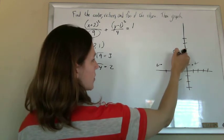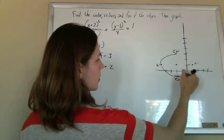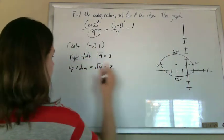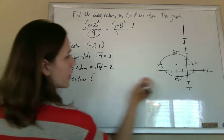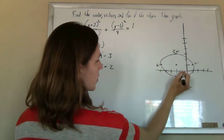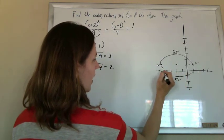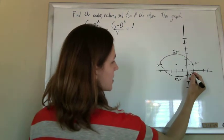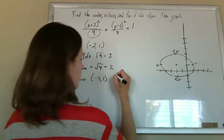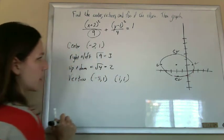So all I do now to graph is just connect those. And I can see, because it came out nice, I can just read the vertices right off the graph. This vertex is at 1, 2, 3, 4, 5, negative 5, 1. And this vertex is at positive 1, positive 1, so 1, 1, there.